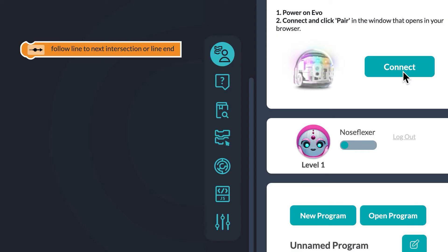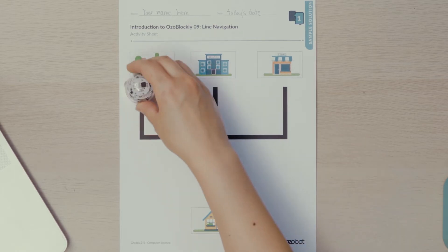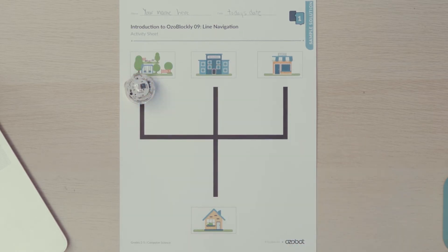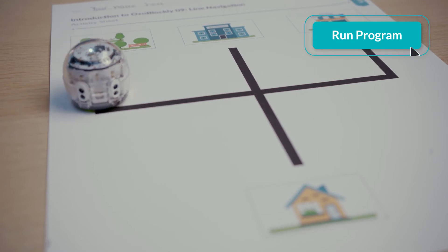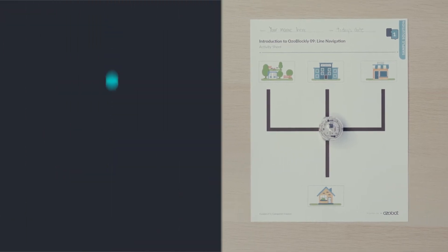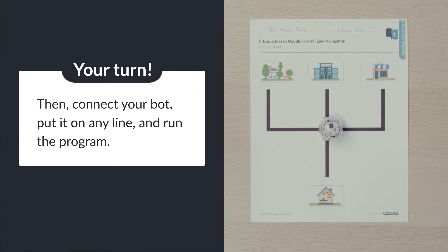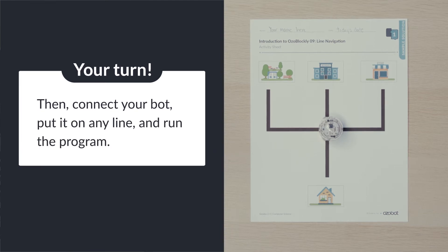I will connect my bot to Ozoblockly by clicking the Evo icon and following the prompts. Then I will place my bot at the park. Now I will click run program. My bot follows the line to the intersection and stops. Now it's your turn. Can you program your bot to follow a line and move to the intersection? Then connect your bot, put it on any line, and run the program.